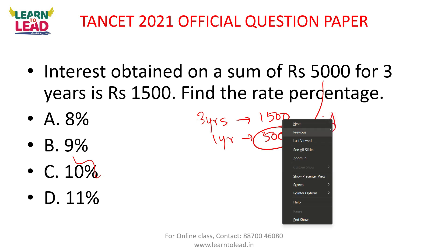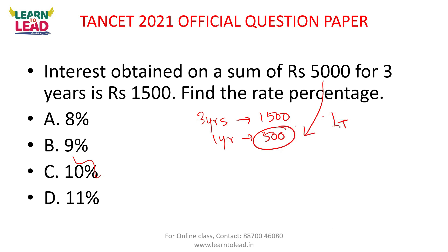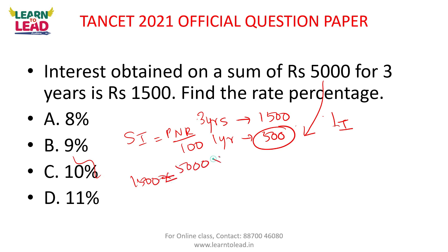If you want to write the question formally: simple interest = PNR/100. So SI 1500 = Principle 5000 × N(3 years) × R ÷ 100. The 00s cancel. 50 × 3 = 150. So R = 1500/150 = 10%.